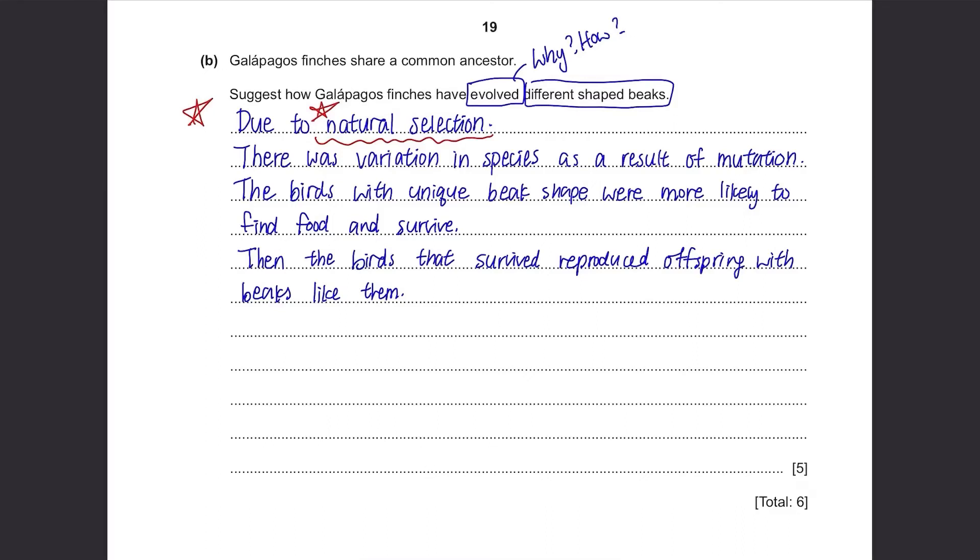The offspring would carry the alleles of beaks with advantage and survive, being able to continue this over many generations and evolving different shaped beaks.